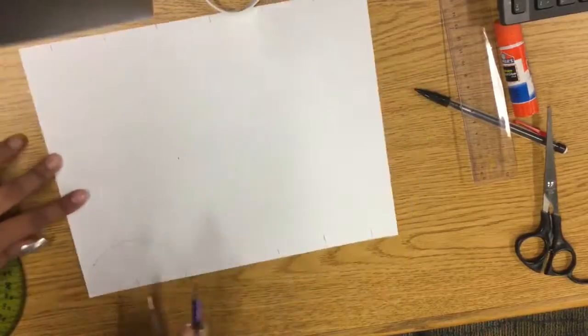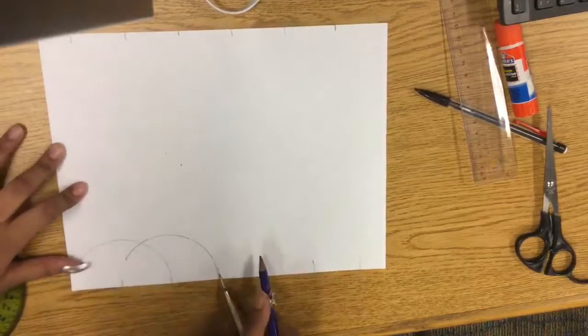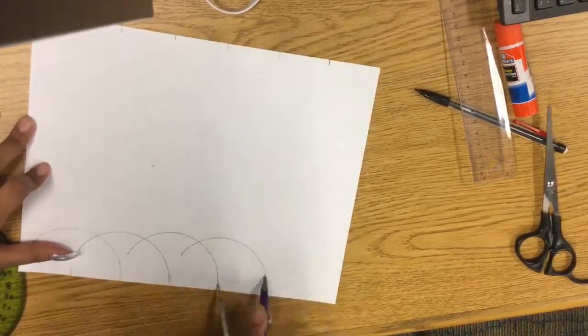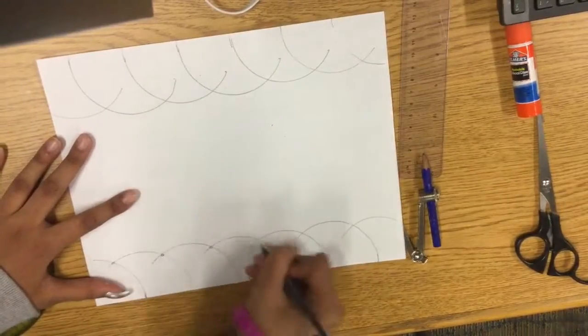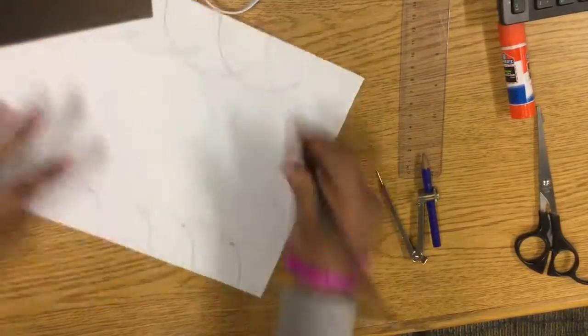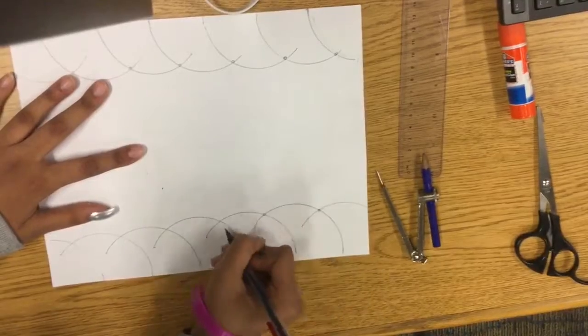I'm starting off by aligning my compass with the dashes and making these really weird looking semicircle arcs. This really helps me make equilateral triangles. Then when you're done with that, you want to put little points where the two semicircles meet.